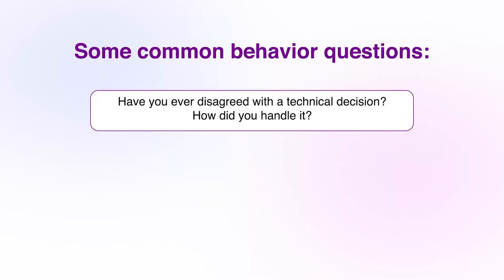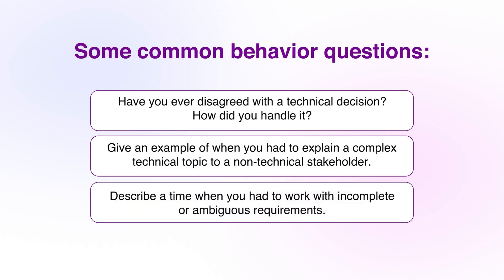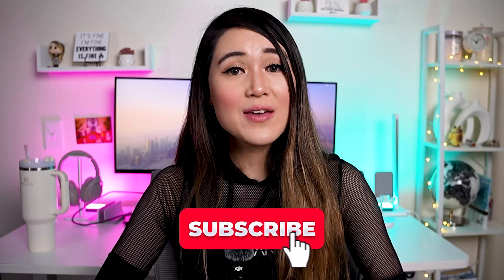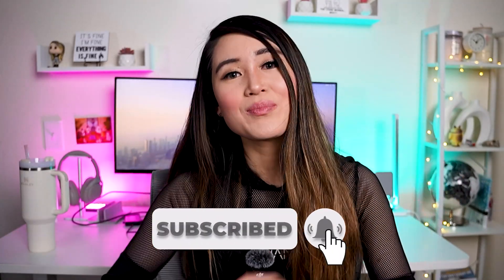Some common behavioral questions you might see are: have you ever disagreed with a technical decision and how did you handle that? Give an example of when you had to explain a complex technical topic to a non-technical stakeholder. Describe a time when you had to work with incomplete or ambiguous requirements. And that's all for this video — I hope you do well on your interviews. If this was helpful, please feel free to hit that subscribe button. I'll be posting more software engineering resources and career tips on my channel. Thank you for watching and see you in the next one!